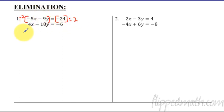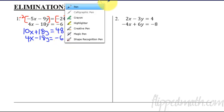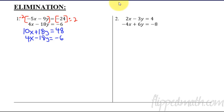I'm going to multiply that by negative 2. Let's write the result of multiplying down here. Negative 2 times negative 2 is a positive 10x. Negative 2 times negative 9y is a positive 18y. And then that equals negative 24 times a negative 2 is a positive 48. Now I'm going to go ahead and rewrite the second equation as well. So I get 4x minus 18y equals negative 6.